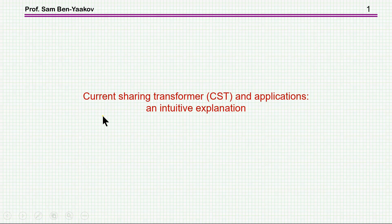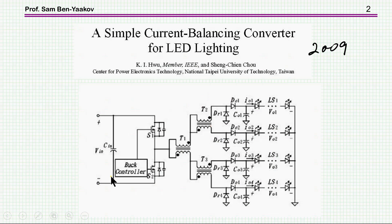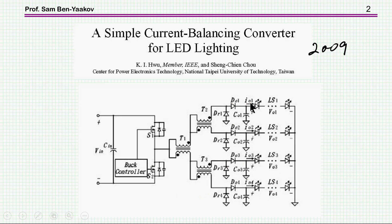Hi, I'm Sam Ben-Yakov. This presentation is entitled Current Sharing Transformer and Applications, an intuitive explanation. Here is one example of using current sharing transformers. This is a switcher, a square wave generator. Then we have a current sharing transformer that splits the current into two equal parts, and then two more transformers which again split each half into quarters. So we have LED strings or arrays which are driven by the same current. Here we have a rectifier, so the current reaching the LEDs is DC.